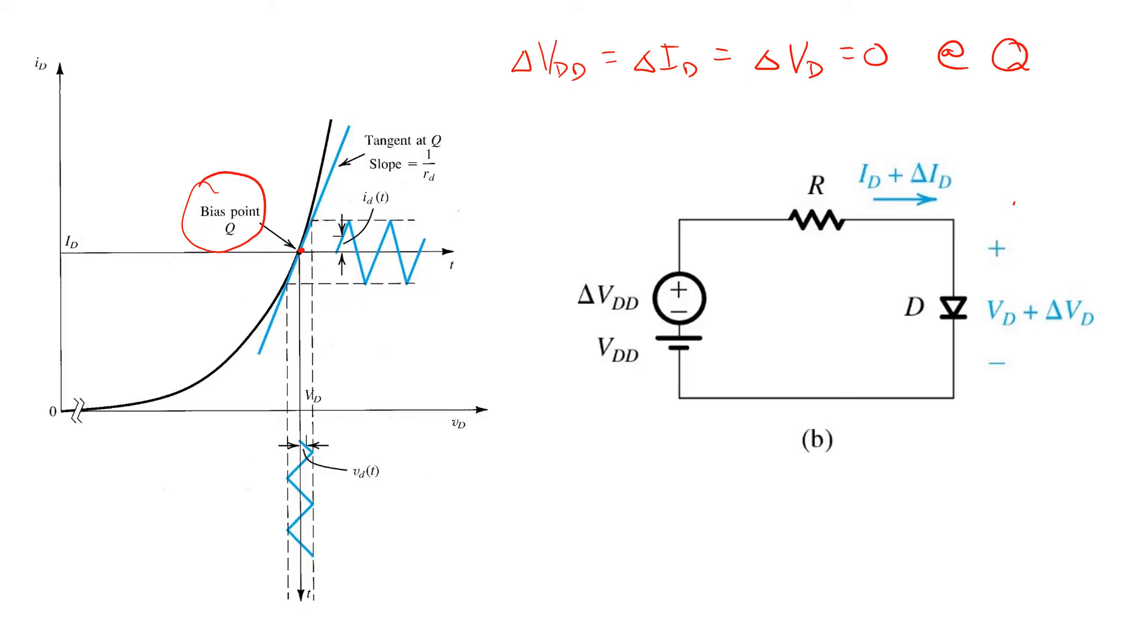To perform the small signal analysis, we'll need the slope of this IV relationship evaluated at the bias point Q. So remembering that the IV relationship is an exponential, IS E to the VD over VT, again evaluated at Q. We can take that derivative pretty straightforwardly. We end up with IS over VT, E to the VD over VT evaluated again at Q.